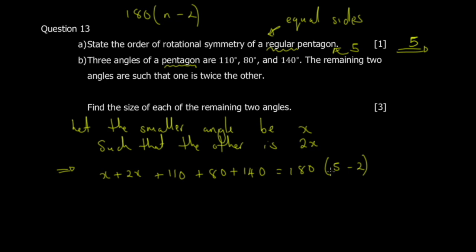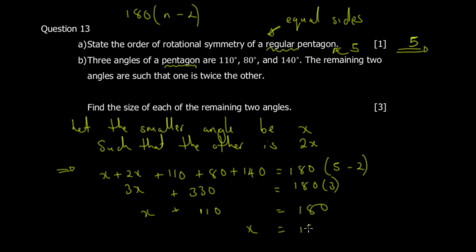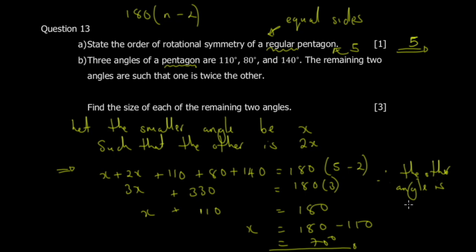So 3x + 110 + 80 + 140 = 540. Combining the known angles: 110 + 140 = 250, then 250 + 80 = 330. So 3x + 330 = 540. Dividing throughout by 3: x + 110 = 180, so x = 70 degrees. Therefore the other angle is 2x = 2 × 70 = 140 degrees.